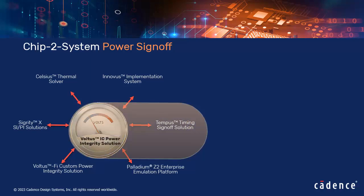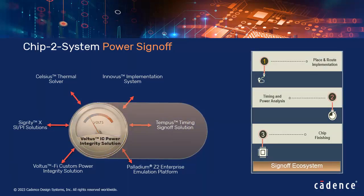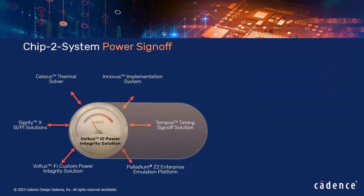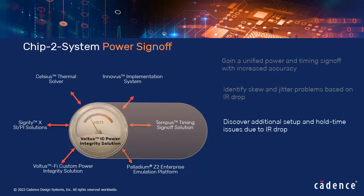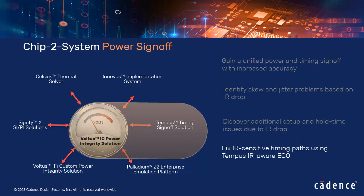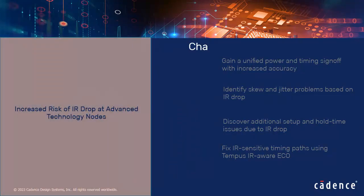Voltus is part of an efficient sign-off ecosystem that provides a seamless design flow all the way from place and route implementation to timing and power analysis to chip finishing. It tightly couples with Tempus to ensure timing analysis is robust and accurate with respect to voltage variations. The primary goals of this integration are: gain a unified power and timing sign-off with increased accuracy, identify skew and jitter problems based on IR drop, discover additional setup and hold time issues due to IR drop, and fix IR-sensitive timing paths using Tempus IR-aware ECO.